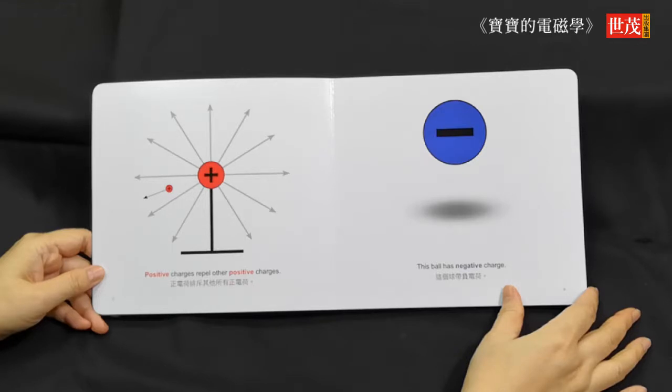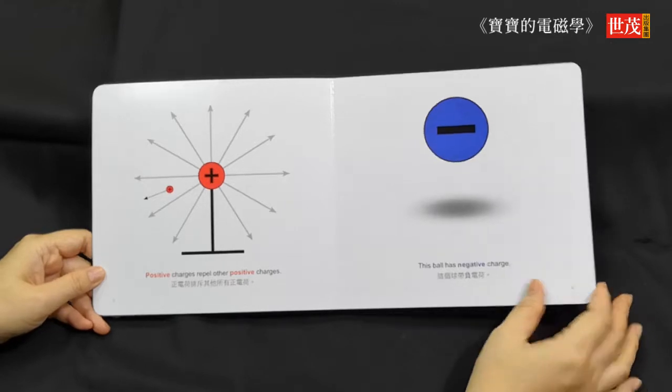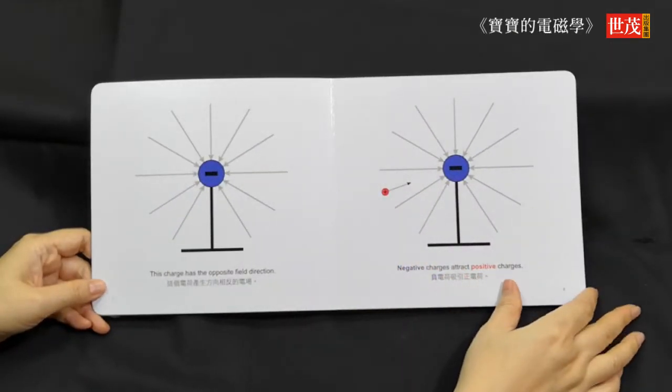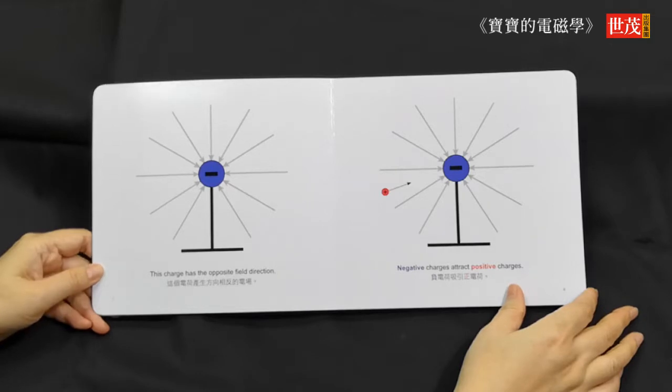This ball has negative charge. This charge has the opposite field direction.